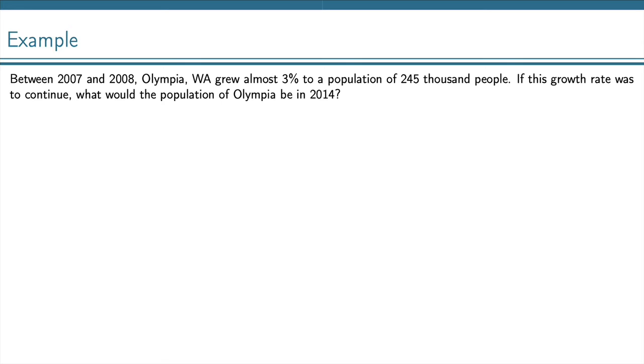Let's look at another example. Between 2007 and 2008, Olympia, Washington grew almost 3% to a population of 245,000 people. If this growth rate was to continue, what would the population of Olympia be in 2014?